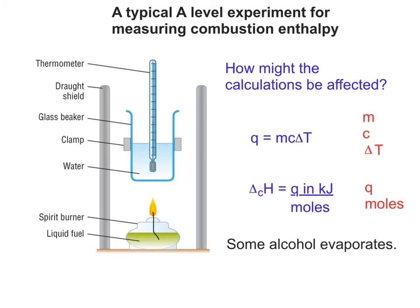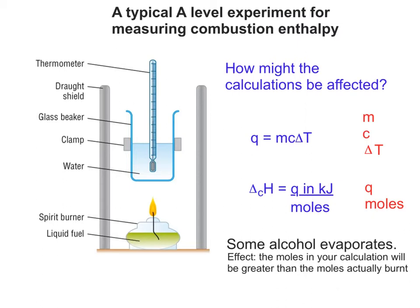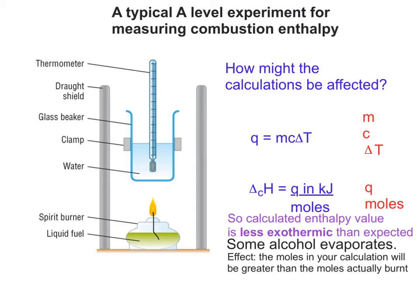So if some alcohol evaporates, the effect is that the difference in mass measured does not equal the mass of alcohol that's been burned. You measure the mass of the spirit burner before and after carrying out the burning, and hopefully the difference in those two values will equal the amount of fuel burned. If some of the fuel evaporates and is not burnt, the difference in mass will not equal the mass of alcohol burned — it will be lower than assumed. So the moles in your calculation will actually be bigger than the moles actually burned, meaning the calculated enthalpy value will be less exothermic than expected.